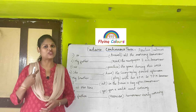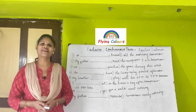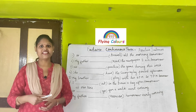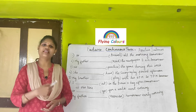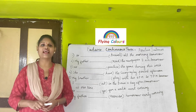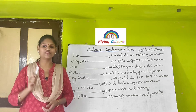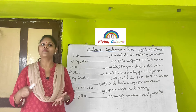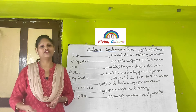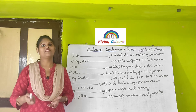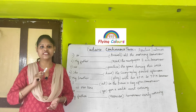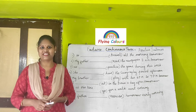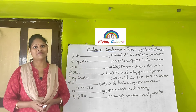Now I'm going to teach you some positive sentences. The formula for positive sentences is: subject plus will plus be plus present participle. Always use present participle for continuous tenses — whether it is future continuous, past continuous, past perfect continuous, or future perfect continuous. If you see any continuous tense, you must use present participles.